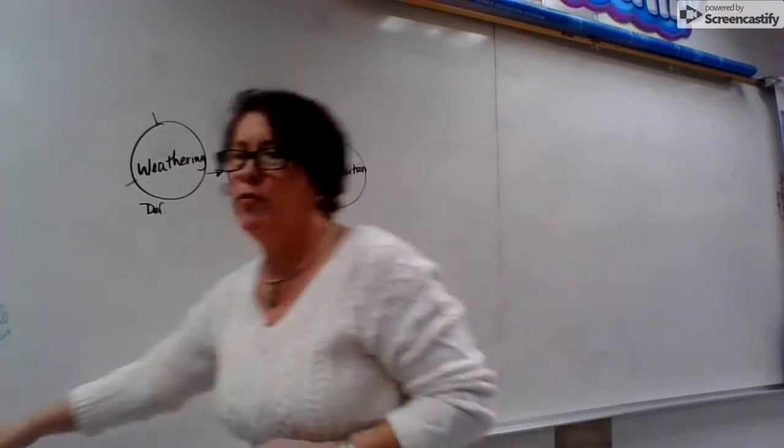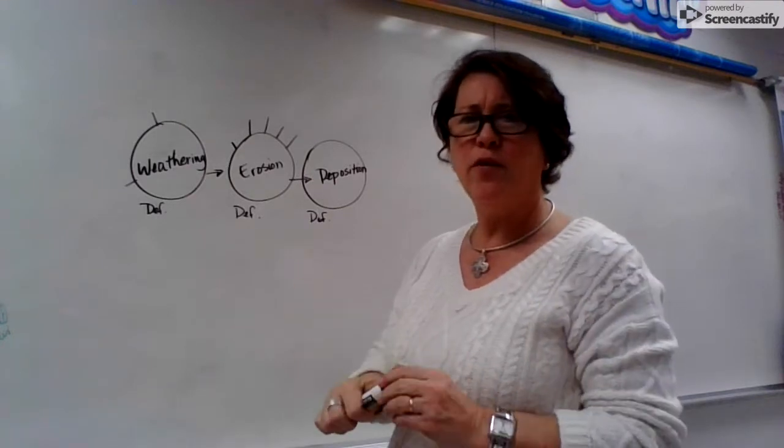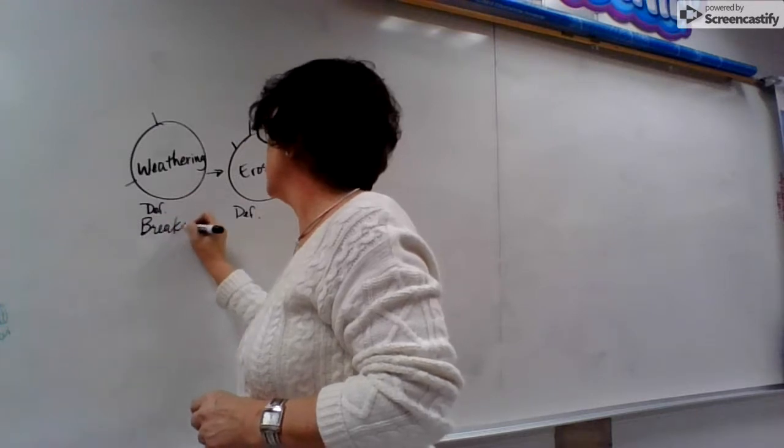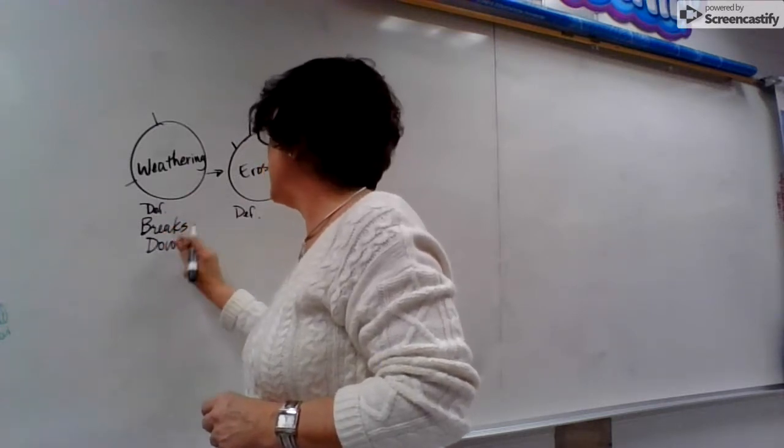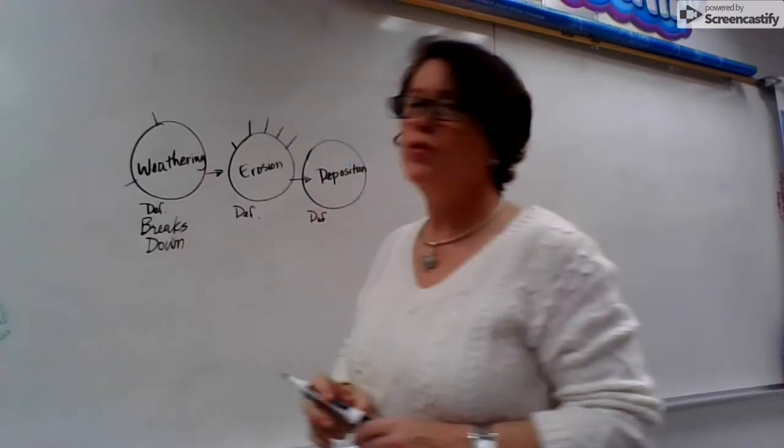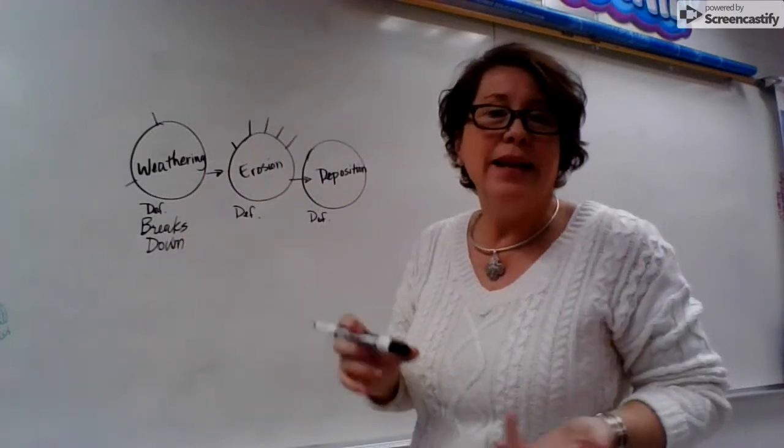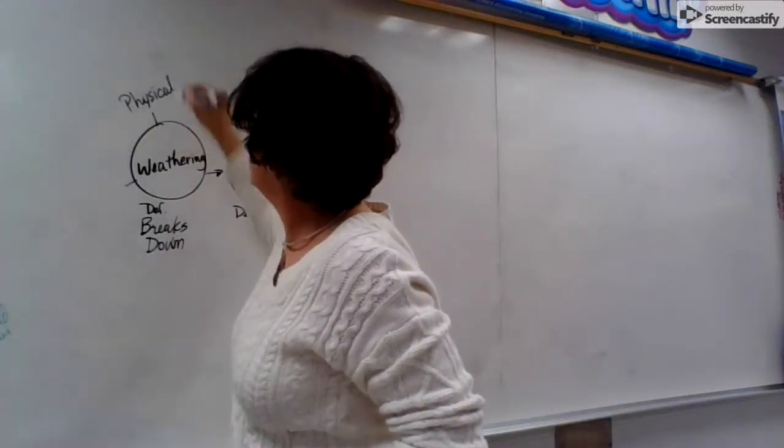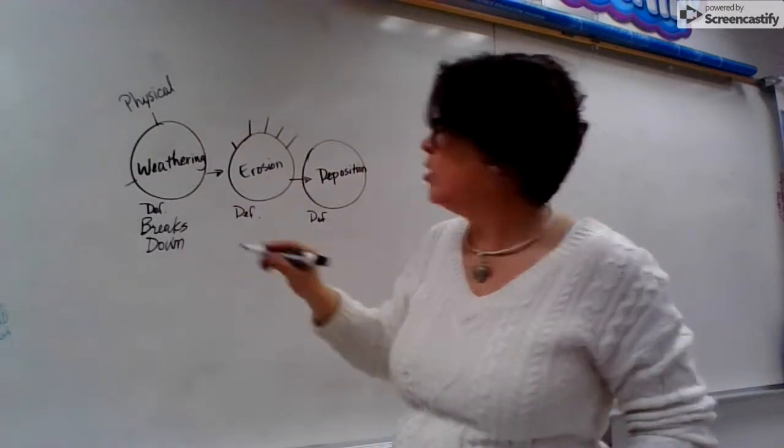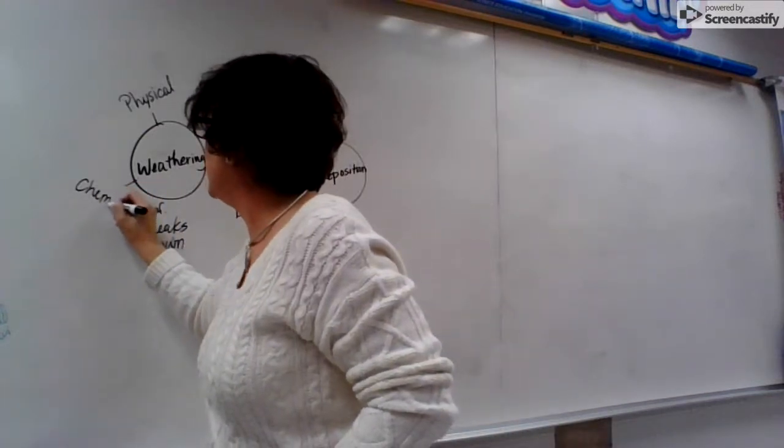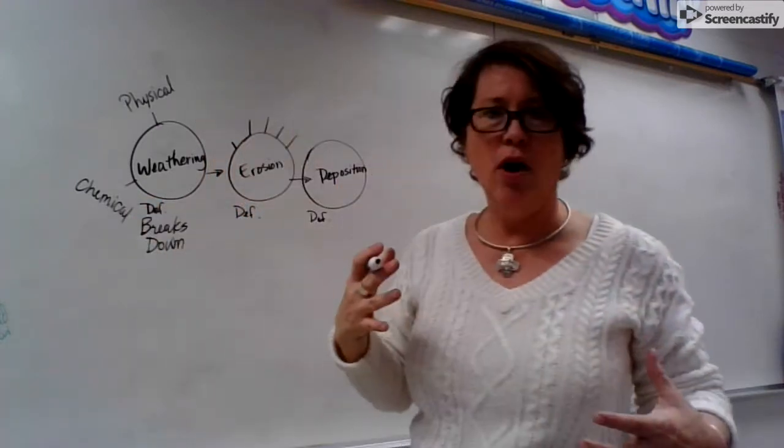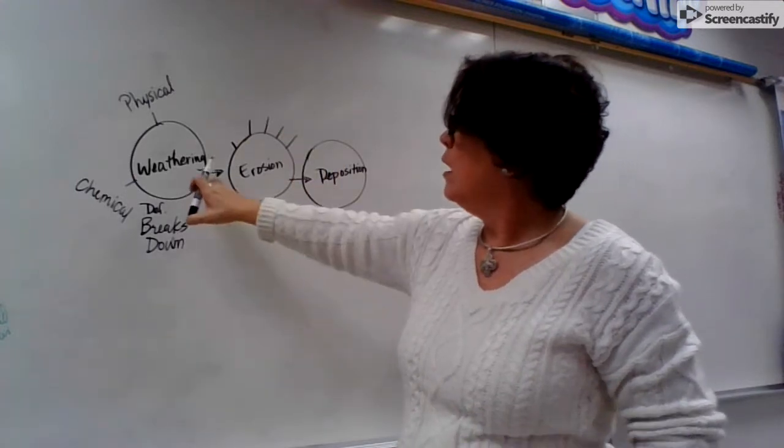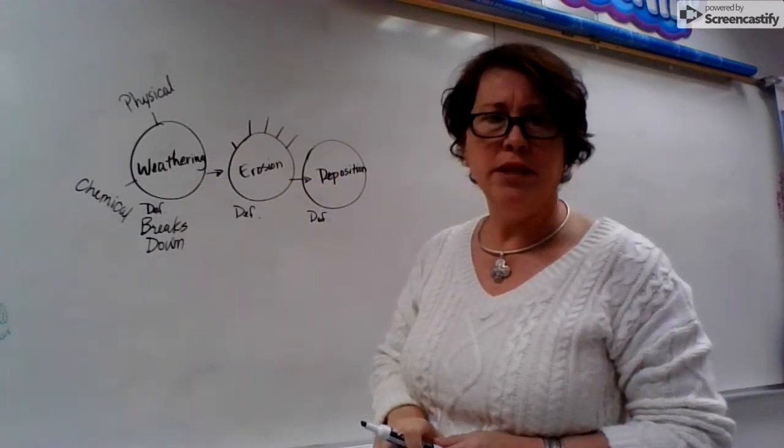When we talk about weathering, what is our really simple definition? It's going to be breaks down. So things break down other materials on the planet. What does that and how does that work? Well, we have physical mechanisms that break things down and we also have chemical. So I am making a mind map to help me. We have physical and chemical things that break down earth materials.